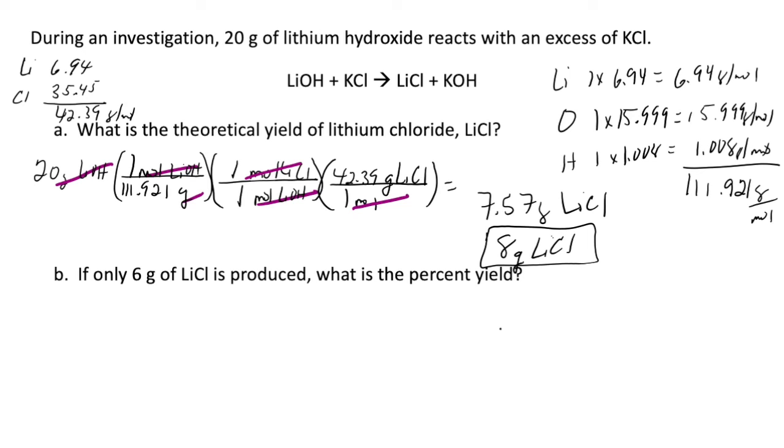Now, the theoretical yield is the amount that will be produced in perfect conditions. And when we say perfect conditions, that means there is no human error, no mishaps in measuring, or anything like that. But in this case, only 6 grams of lithium chloride was actually produced in the lab. So what is the percent yield?